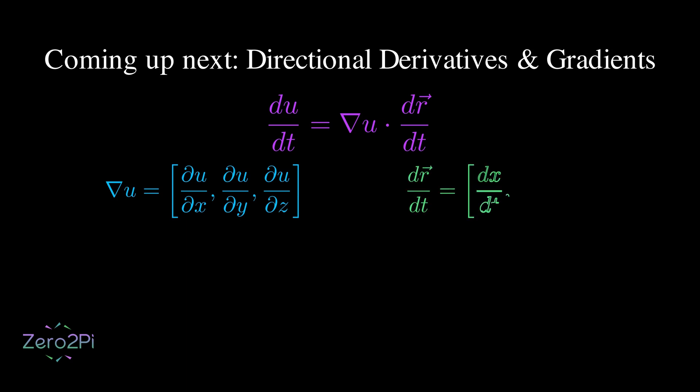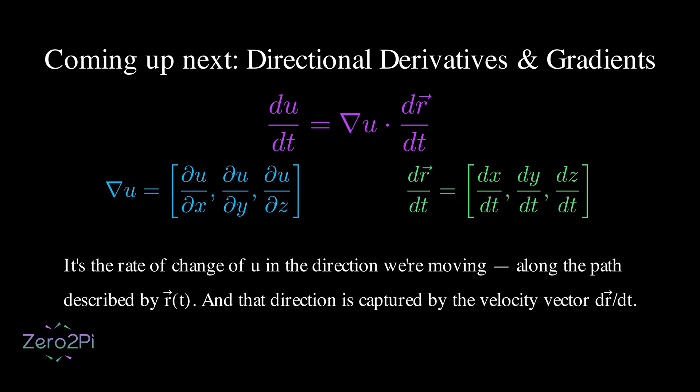The second vector is the velocity vector, which describes the direction and speed of our path in the xy plane. And their dot product tells us the rate of change of our function u in the specific direction we are moving. It's an incredibly powerful concept in physics, engineering, computer graphics, etc. If you want a detailed video on this topic, please tell me in the comments below and I'll see you in the next video.